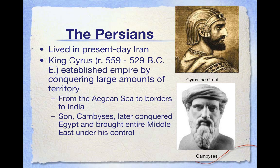The areas Cyrus conquered made up northern Mesopotamia, Syria, Canaan, the Phoenician cities, Libya, and some of the Greek city-states that were in Asia Minor. That's one of the reasons why the Greeks come into conflict with the Persians — they are competing over land.